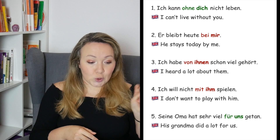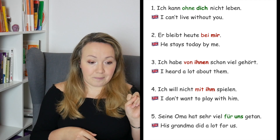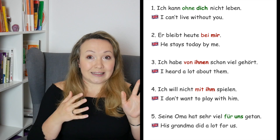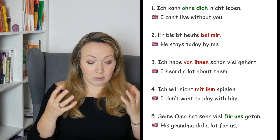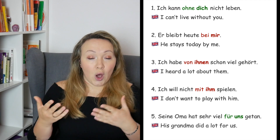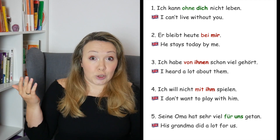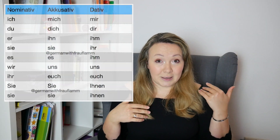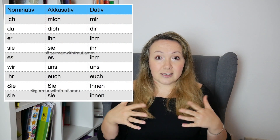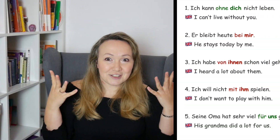Sentence number two: 'Er bleibt heute bei mir.' In this sentence we use dative because 'bei' always comes with dative, as we know from the table in the beginning. 'Ich' in dative is 'mir.' Isn't that like magic?